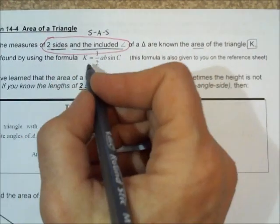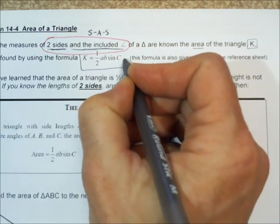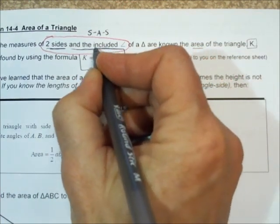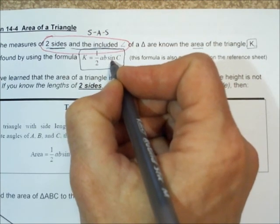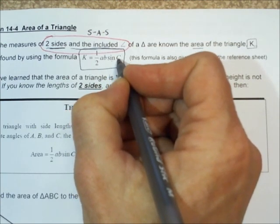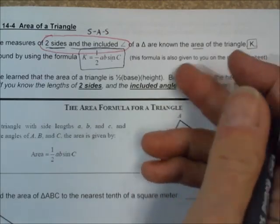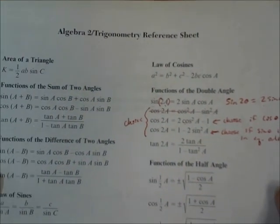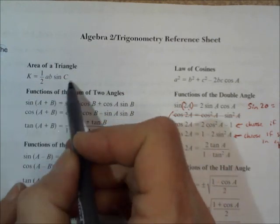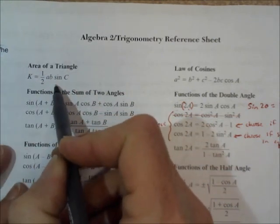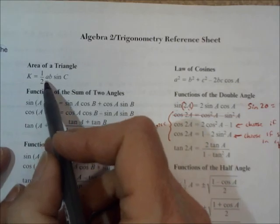So the formula for the area of a triangle is one-half times A times B, which are the two sides, times the sine of the included angle. This formula is given to you on the reference sheet. The area of the triangle formula is the very first one you see, so you don't have to memorize this formula — you just have to be able to use it.